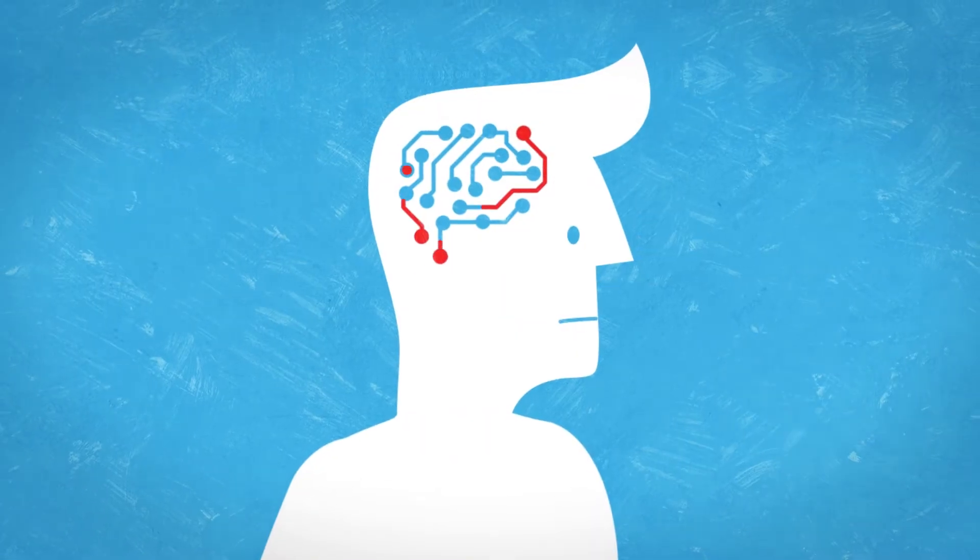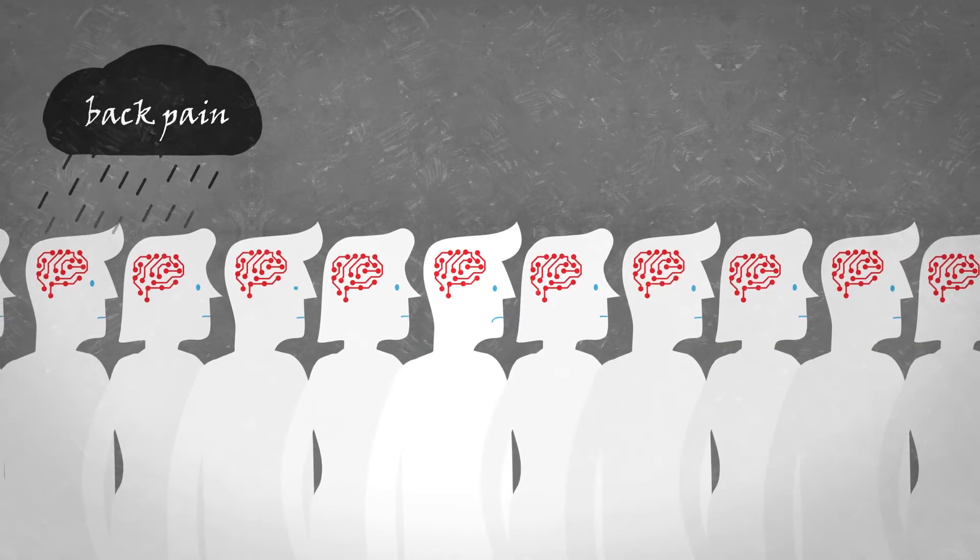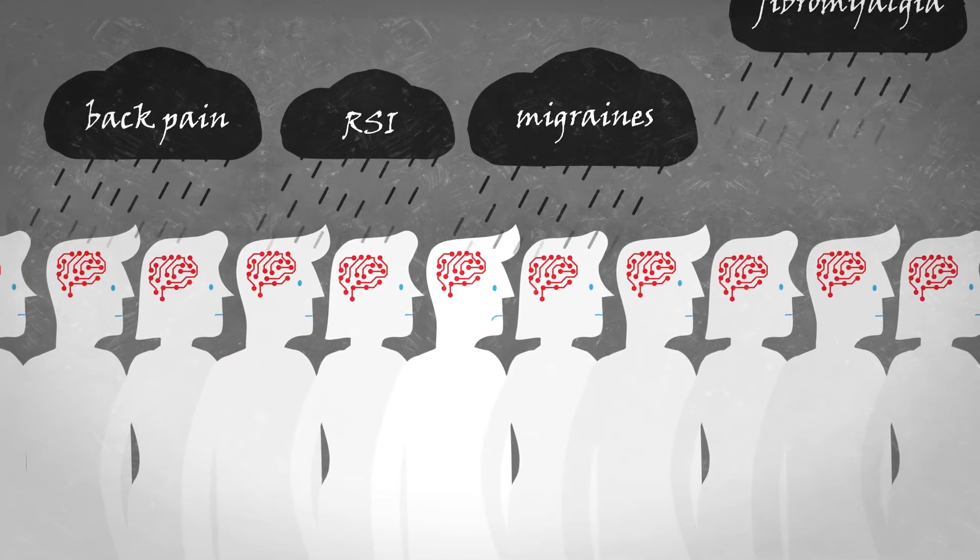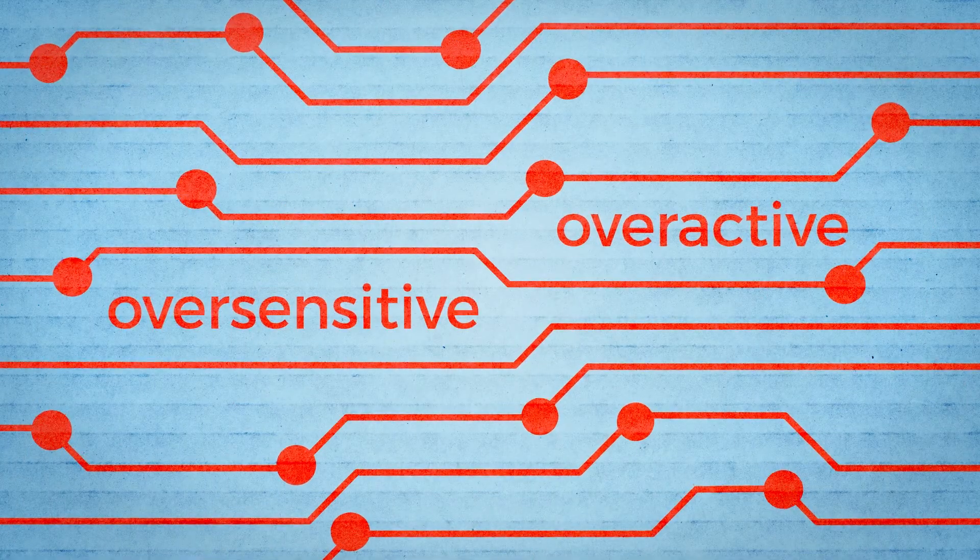The problem is that sometimes our pain system can malfunction, as is often the case for many people that suffer from chronic pain conditions such as back pain, RSI, migraines, and fibromyalgia. Our pain system becomes overactive and oversensitive.